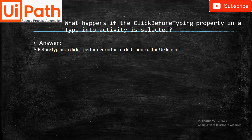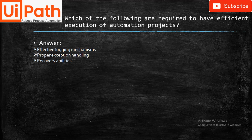What happens if the Click Before Typing property in the Type Into activity is selected? Whenever Click Before Typing is selected, a click is performed on the top-left corner of the UI element.